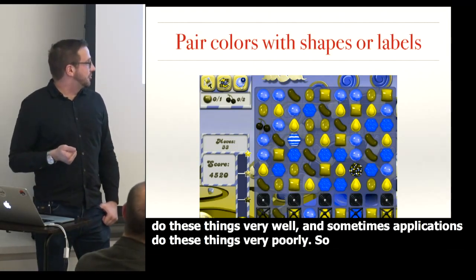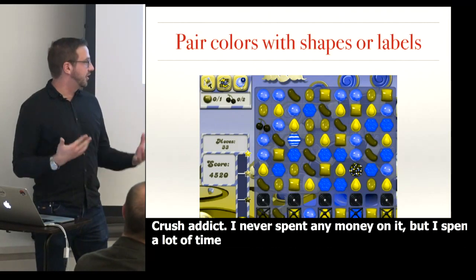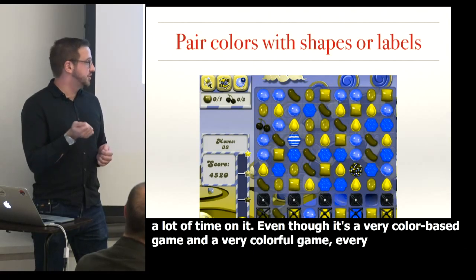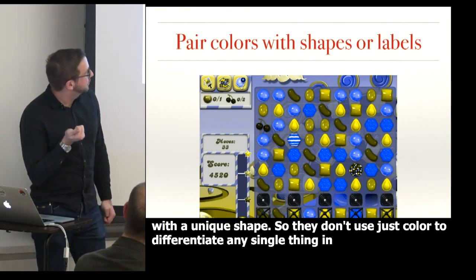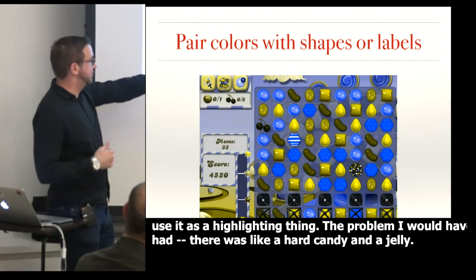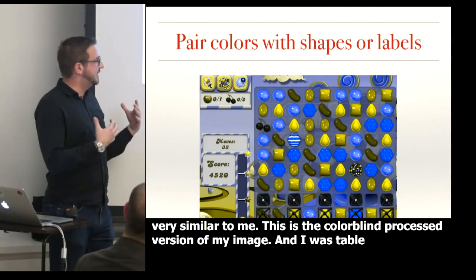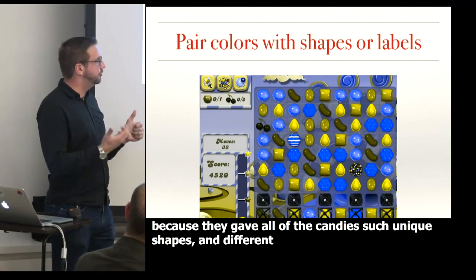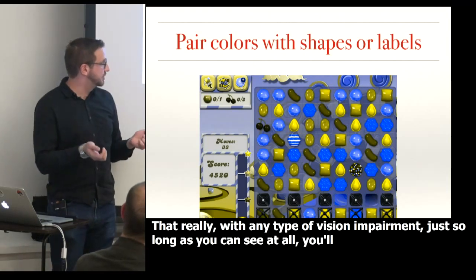I'm a recovering Candy Crush addict — I never spent money on it, but I spent a lot of time on it. One reason is that even though it's a very color-based game, every color is paired with a unique shape. They don't use just color to differentiate things; color is just extra highlighting. The problem I would have had otherwise is that a hard candy and a jelly look very similar to me in the colorblind-processed version. But I was able to play the game because they gave all the candy unique shapes and different brightnesses, so with any type of vision impairment, as long as you can see it at all, everything stands out.